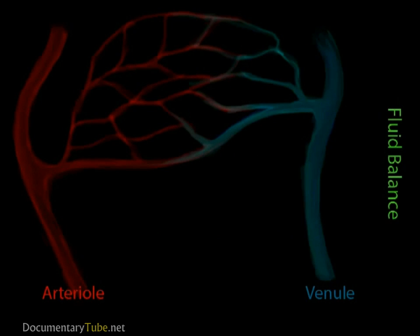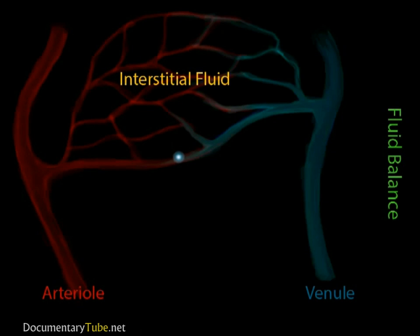From your understanding of the circulatory system, you know that blood passes through the arteries, arterioles, and then the capillaries. The capillary walls allow the fluid portion of the blood to exit the capillaries into the surrounding tissues. Once the fluid leaves the capillaries, it is called interstitial fluid. About 90% of this fluid will diffuse back into the capillaries because of the difference in concentrations of the fluid.